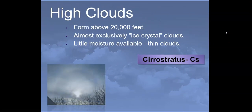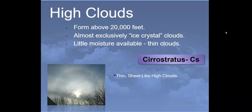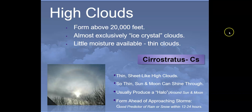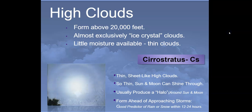The next high cloud type is cirrostratus. These are very thin, sheet-like high clouds that allow the sun and moon to shine through them. They generally produce a halo effect around the sun or moon and are a good predictor of rain or snow within the next 12 to 24 hours. So if you see a halo around the moon or sun, there's probably a storm coming.